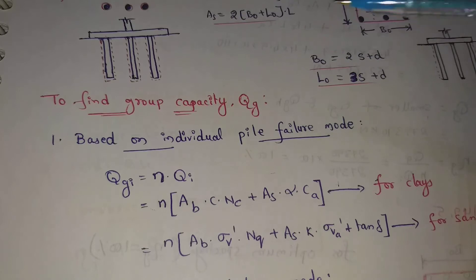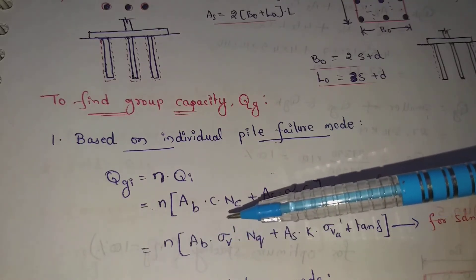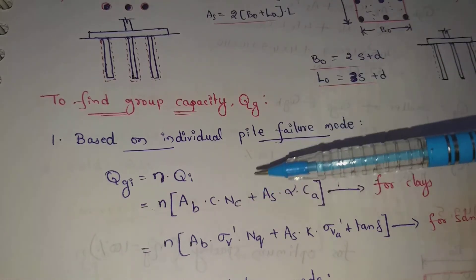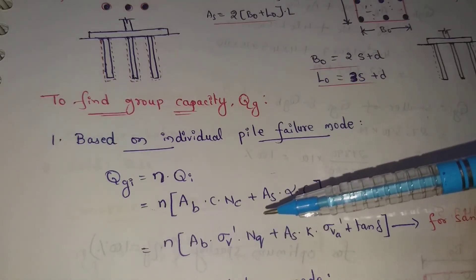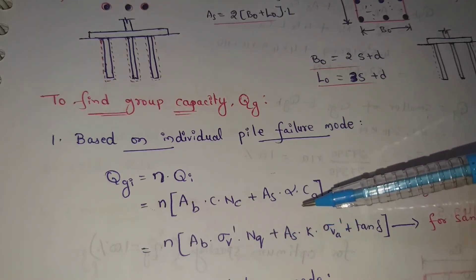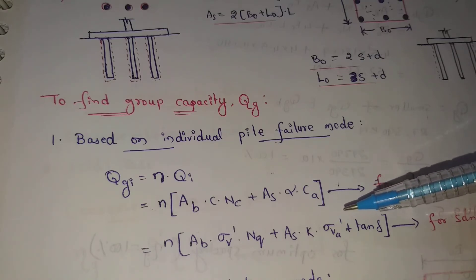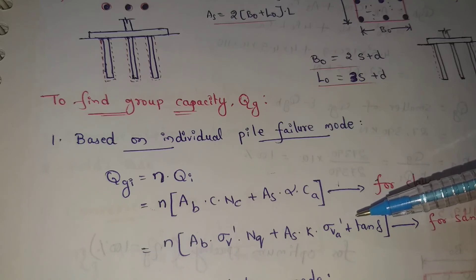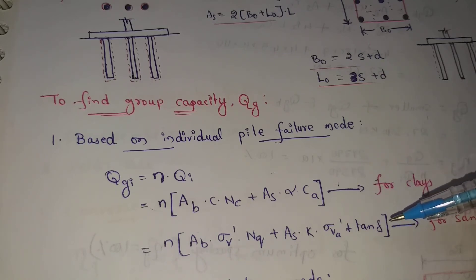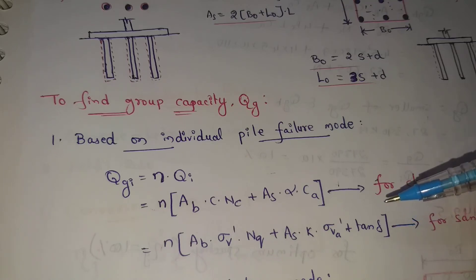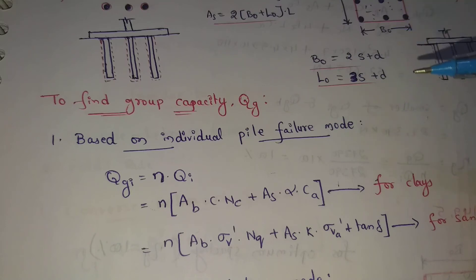For sands, n into Qi value: Qi equals Ab into sigma-v-dash into Nq, plus K into sigma-v-a-dash into tan-delta into surface area of pile. Here sigma-v-dash is effective vertical stress, Nq is bearing capacity factor, K is coefficient of lateral earth pressure, sigma-v-a-dash is average effective vertical stress along pile length, and delta is angle of friction between soil and pile.